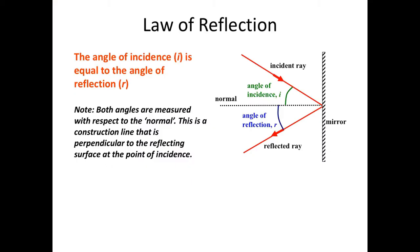The law of reflection states the angle of incidence equals the angle of reflection. Both angles must be measured from the normal — a perpendicular (dotted) line to the mirror — not from the mirror surface itself. Some students mistakenly measure from the mirror surface, but all angles must always be measured from the normal. You should use a protractor to verify equal angles in the exam.